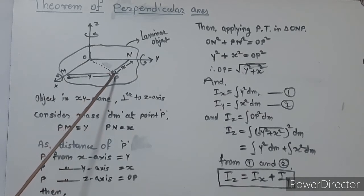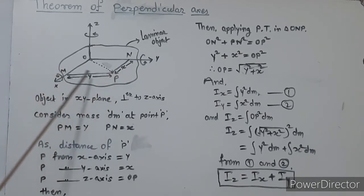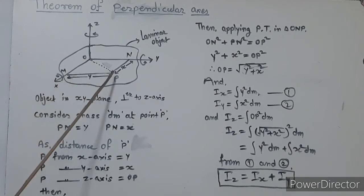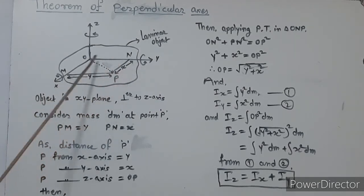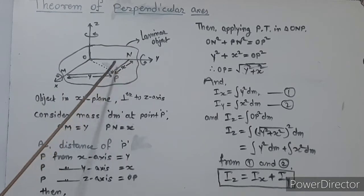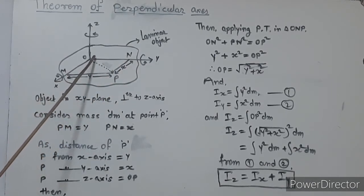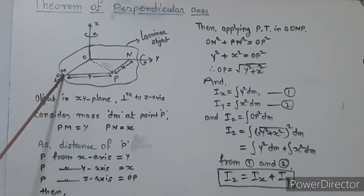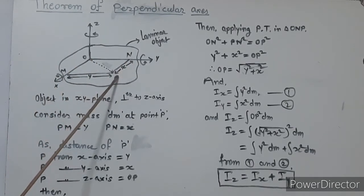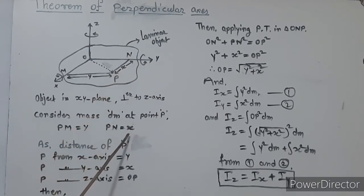Similarly, dropping a perpendicular from P to the x-axis, that distance is y. And dropping a perpendicular from P to the y-axis, that distance is x. So the distance from P to the x-axis is y, and the distance from P to the y-axis is x.